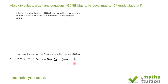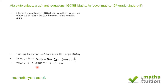We can write minus 3 over 5 as minus 0.6. Similarly, for the second equation, when we remove the brackets, we end up with minus 3 minus 5x is equal to 0. By the same manipulation as in the first case, x is equal to minus 3 over 5.